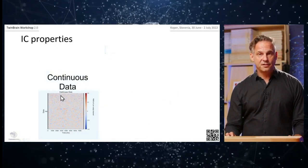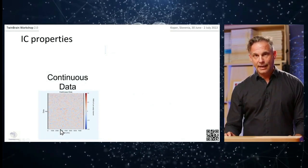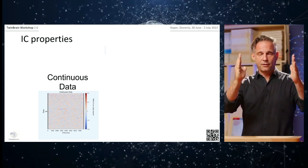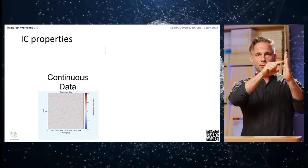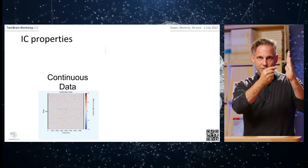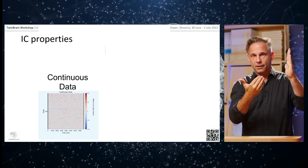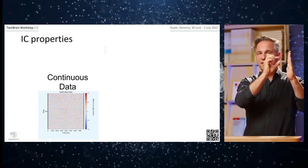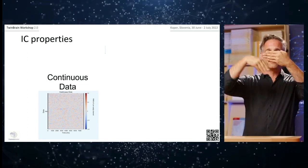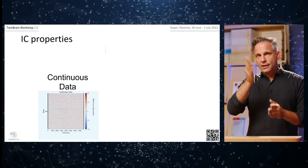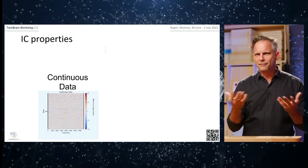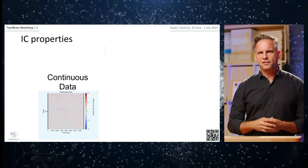Looking at continuous data — this is nothing but stacked color-coded amplitude over time. Imagine an ongoing EEG: positive values are color-coded red, more saturated the more positive; negative amplitudes become bluish, bluer the more negative. You stack color-coded time series on top of each other. If there is event-related activity, you'll see color bands appearing — it's a different form of visualizing event-related activity.